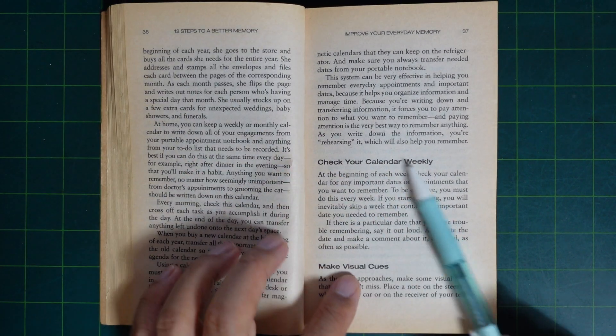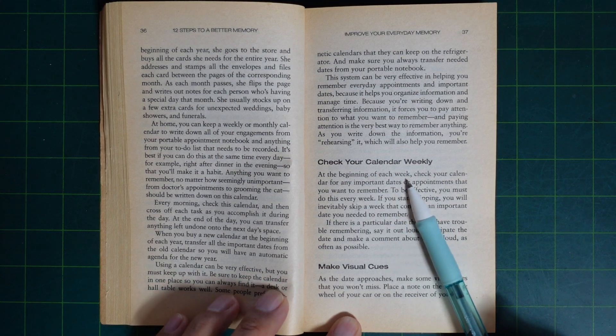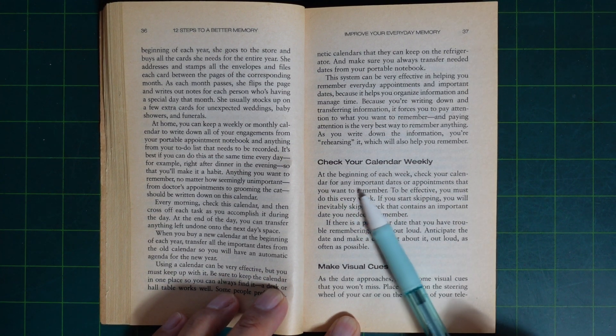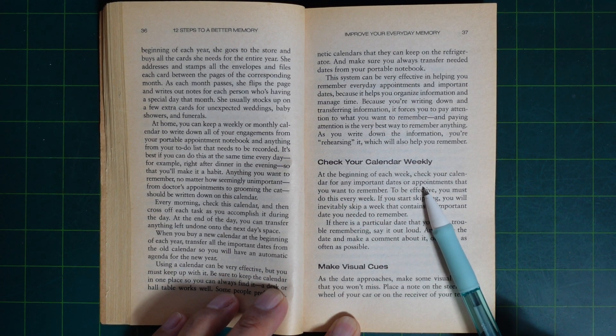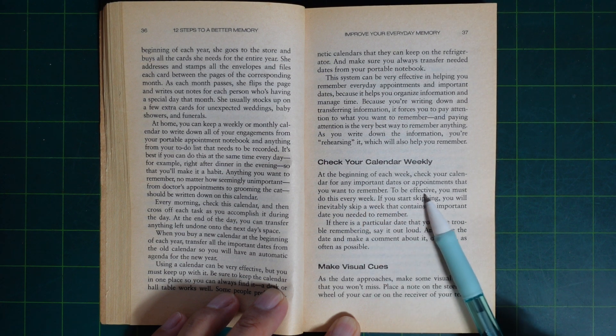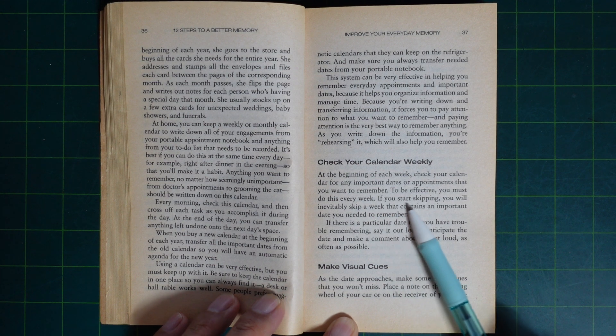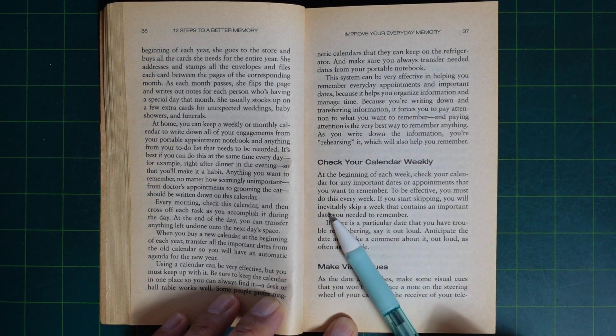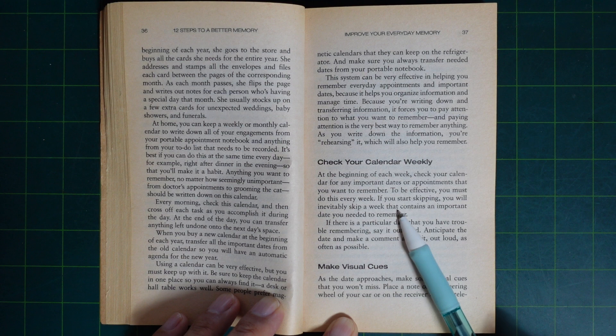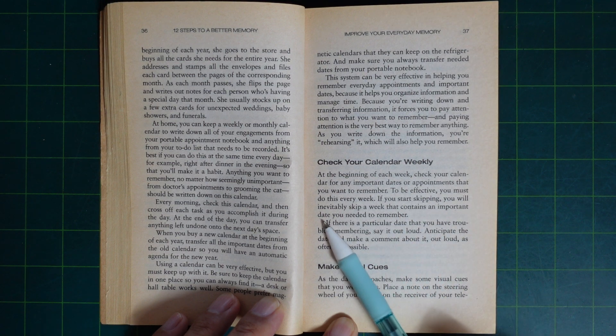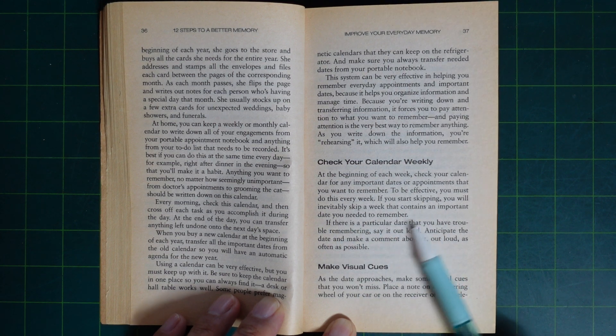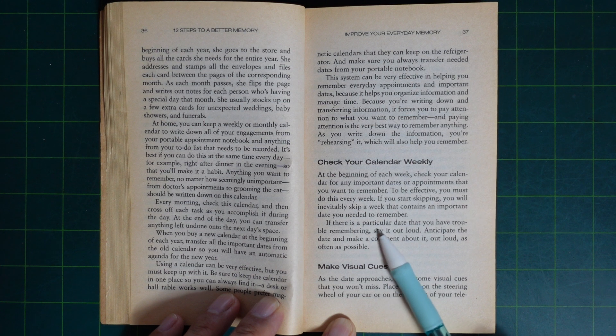Check your calendar weekly. At the beginning of each week, check your calendar for any important dates or appointments that you want to remember. To be effective, you must do this every week. If you start skipping, you will inevitably skip a week that contains an important date you need to remember. If there is a particular date that you have trouble remembering, say it out loud.